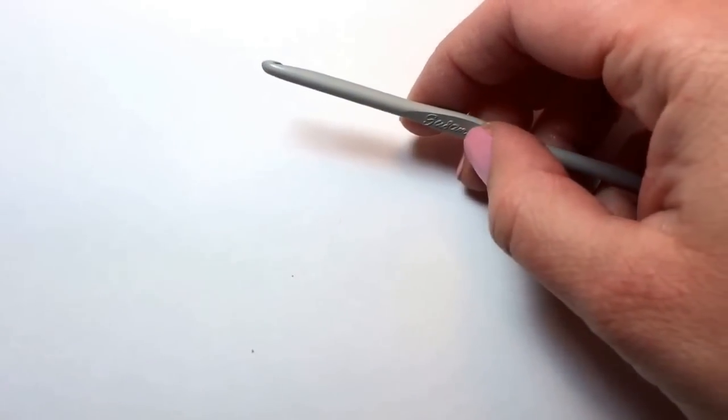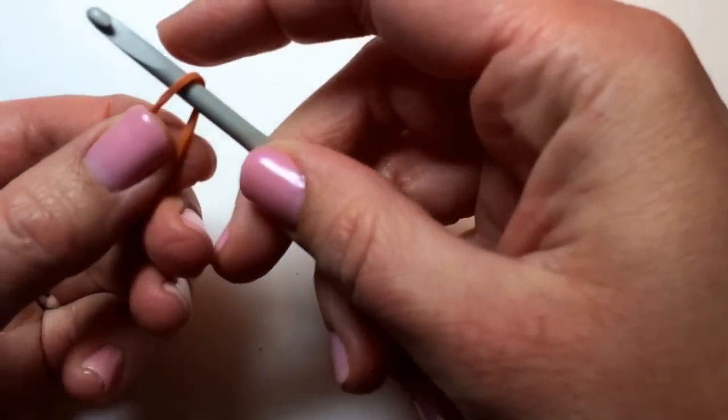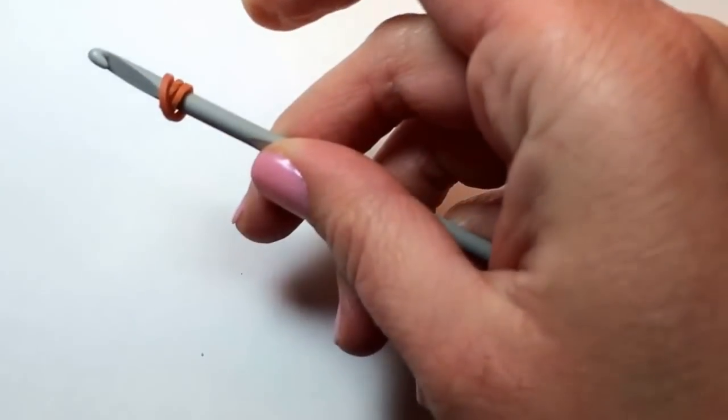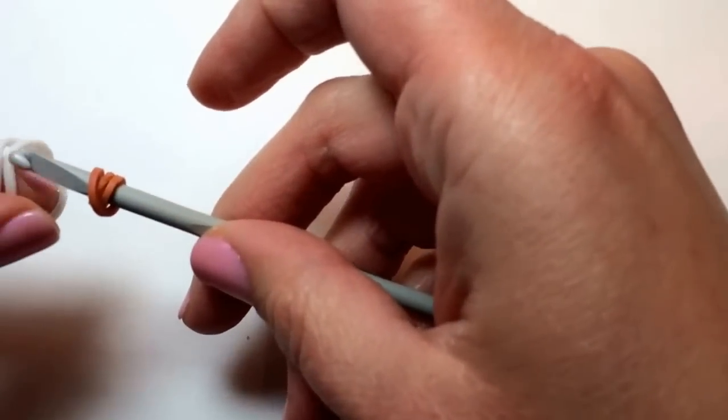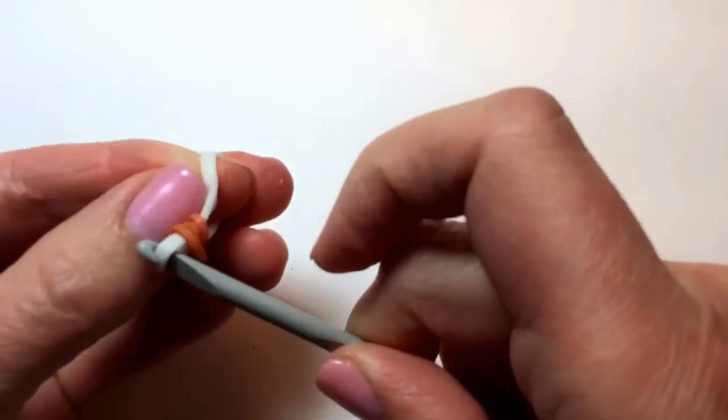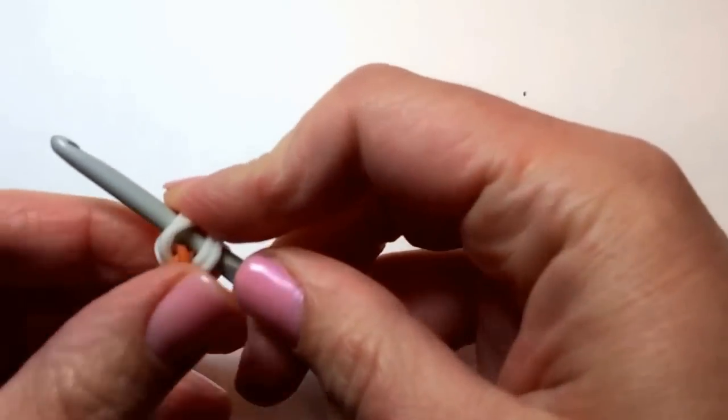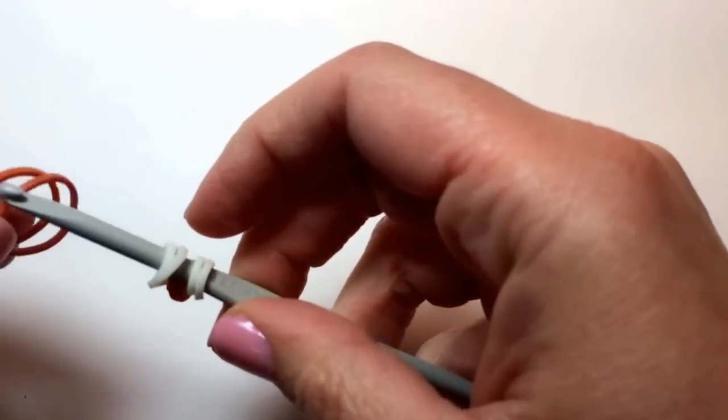To start out, you want to take a single brown rubber band and wrap it around your hook three times. Then take two white rubber bands and slide that brown one to the middle and add two more brown bands.